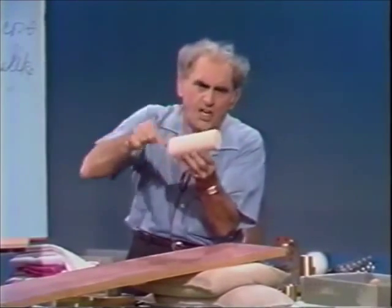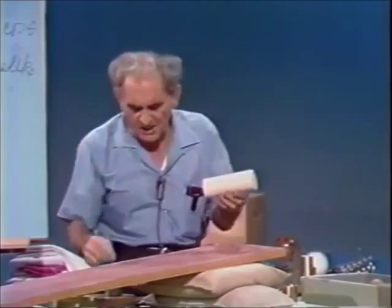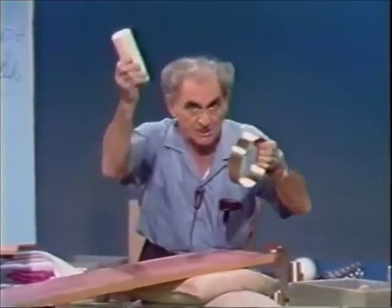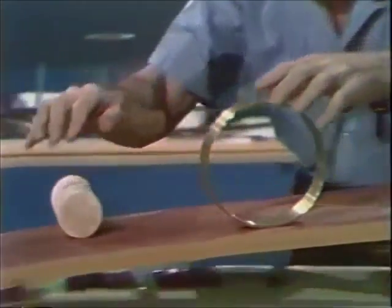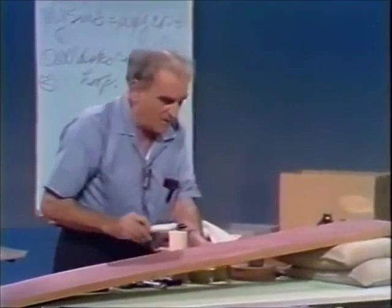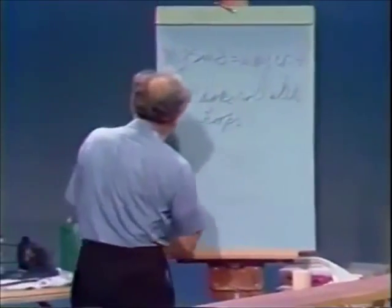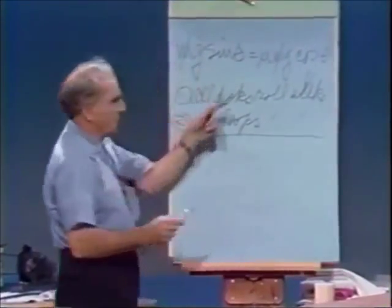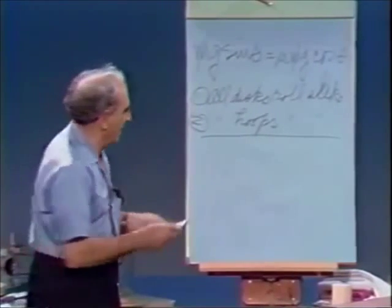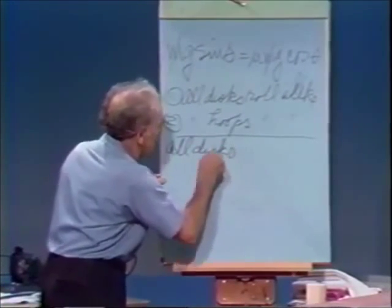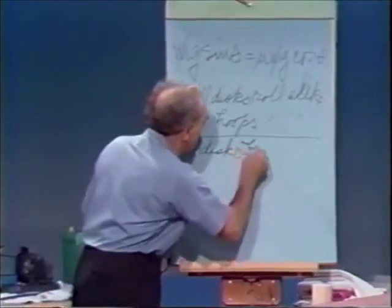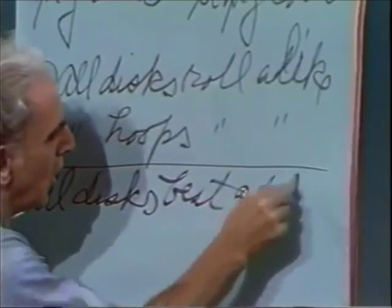Here is a disc. Now, because it has a long axis, we call it a cylinder. But I'm going to show you that that disc behaves the same with this hoop as other discs did. Watch it. All discs roll alike. All hoops roll alike. And all discs beat all hoops.